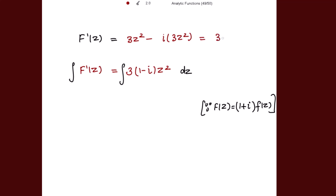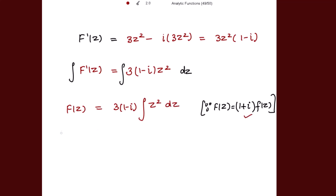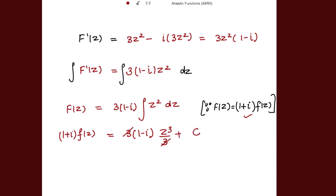Taking 3z² common, F'(z) equals 3z² times (1 minus iota). Integrating both sides, the left hand side becomes F(z), which is (1 plus iota) f(z). So (1 plus iota) f(z) equals 3 times (1 minus iota) times z³ over 3 plus constant. The 3 cancels, giving f(z) equals (1 minus iota) over (1 plus iota) times z³ plus c over (1 plus iota).